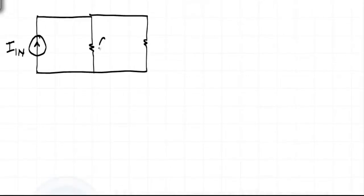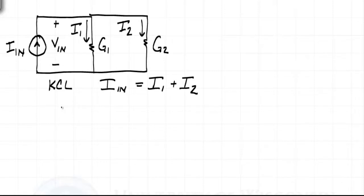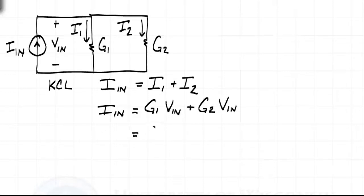Although there is no mathematical difference, conceptually the following may be a little bit easier — the equations are cleaner. Let's look at the same circuit, but this time treat the resistors as conductors. The current through the first conductance we'll call I1, and through the second one I2. By KCL, the input current equals the sum of those two currents. There are only two nodes, so there's only one voltage VN. Substituting Ohm's Law (current equals conductance times voltage), we have the input current equals G1 times VN plus G2 times VN. VN factors out, and we can write this as the equivalent conductance times VN, where the equivalent conductance equals the sum of the conductances in parallel.